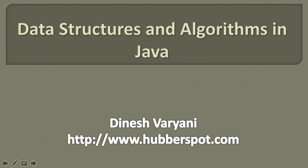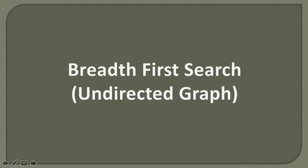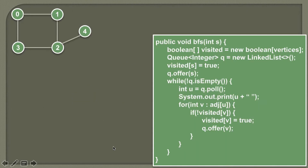Hello friends, welcome to my new data structures and algorithms in Java tutorial series. In this tutorial, we will discuss the breadth first search of an undirected graph. Breadth first search is a traversal or searching technique which we apply to graphs to visit each and every node. Breadth first search is also known as level order traversal.